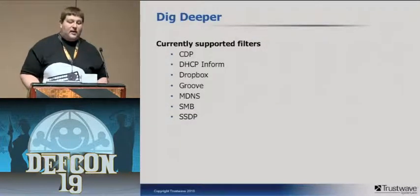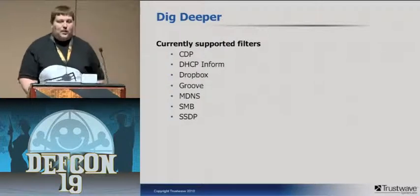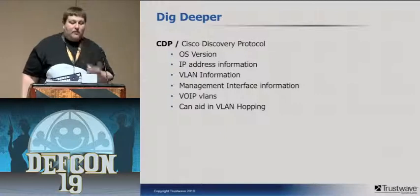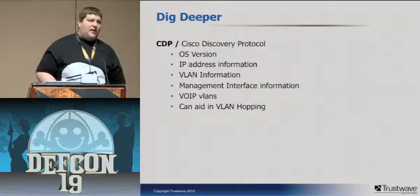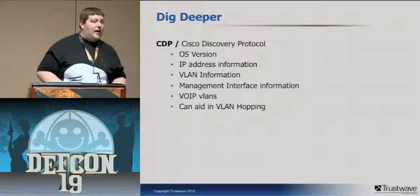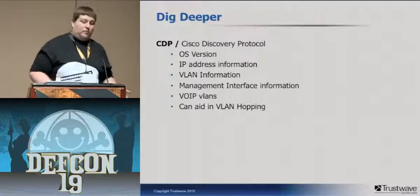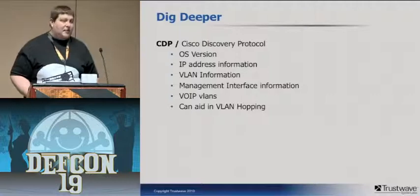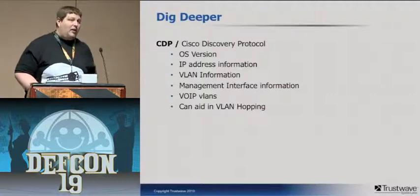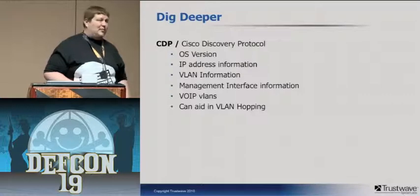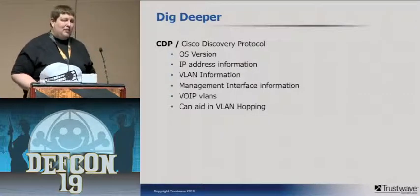Looking at what each filter currently gathers: CDP has OS version, IP address information, and VLAN information. Where this comes in handy during a pen test is you frequently get the voice over IP VLAN and other information that can lead to further compromise. Since you're getting all the OS versions, if there's a vulnerability in a certain version of IOS, this will help you. It also aids in VLAN hopping because it frequently lists all VLANs available, the management VLAN information, and the IP address that accepts SNMP traffic or SSH connections.